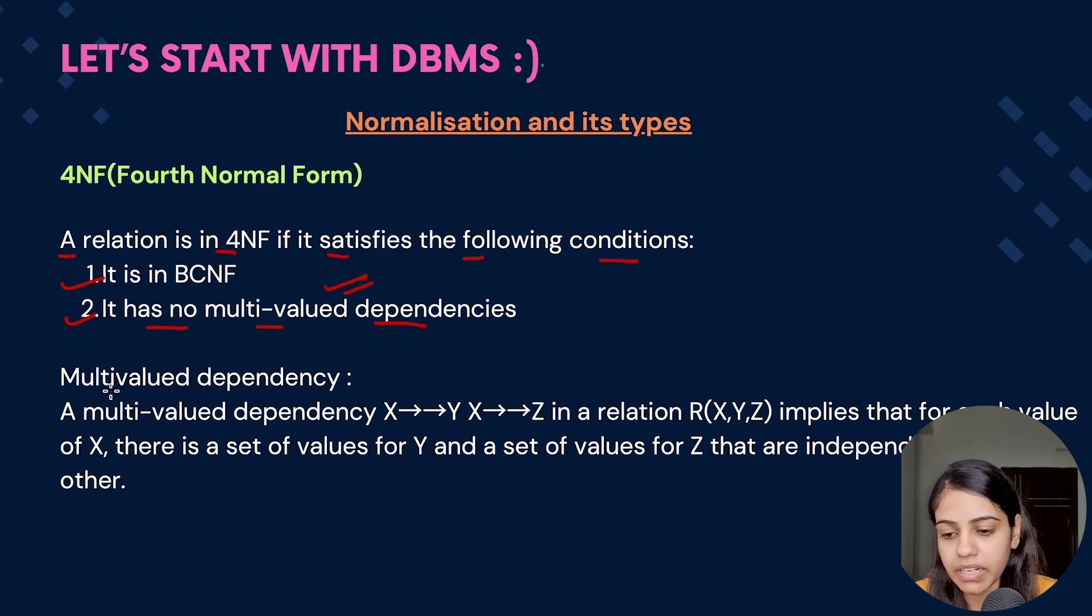Now what is this multi-valued dependency? A multi-valued dependency X determines Y, X determines Z in a relation R(X,Y,Z) implies that for each value of X, there are a set of values of Y and a set of values of Z that are independent of each other.